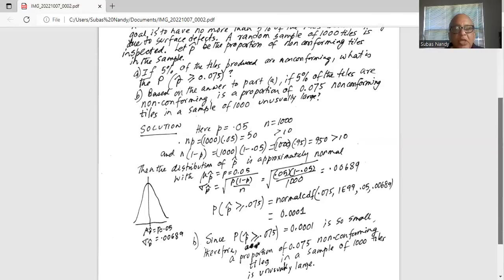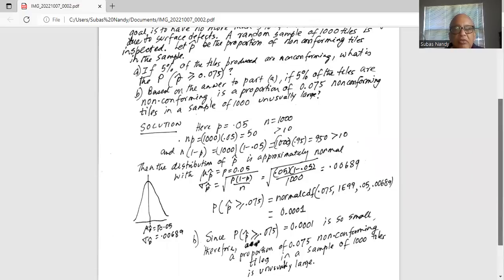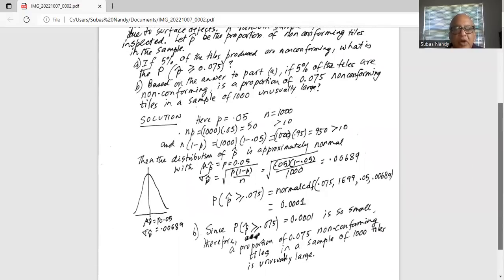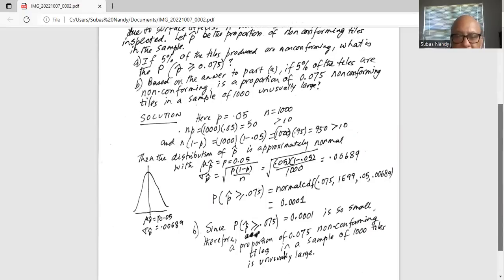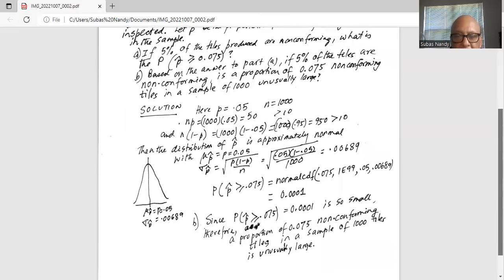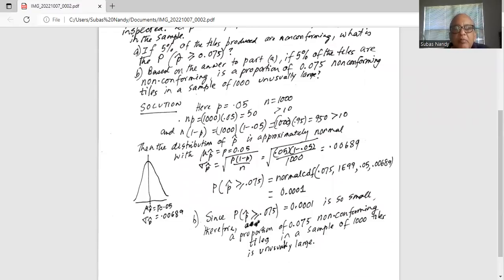Since the probability of p hat greater or equal to 0.075 equals 0.0001 is so small, therefore a proportion of 0.075 non-conforming tiles in a sample of 1000 tiles is unusually large. The event that the sample proportion greater or equal to 0.075 is unusual because the probability is less than 0.05, less than five percent.